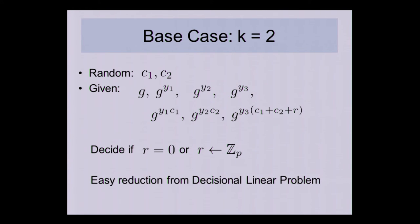It's written very suggestively because it's an easy reduction from the DLIN problem — most terms are given to you directly through the DLIN problem statement. You have all four original terms; the only thing you don't have is g^(y_3). So you choose your own y_3, give out g^(y_3), take your challenge term T = g^(y_3·(c_1+c_2+R)}, and raise it to y_3 to construct that element. It's a direct reduction, and you enjoy the same advantage in deciding the DLIN problem as in deciding this problem.